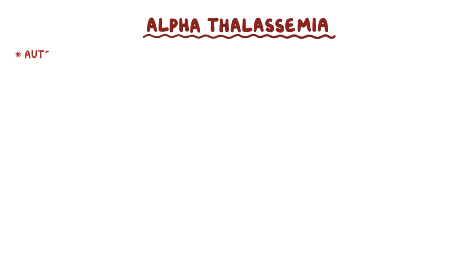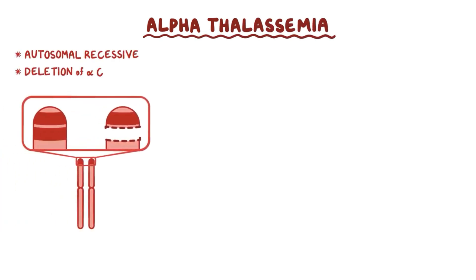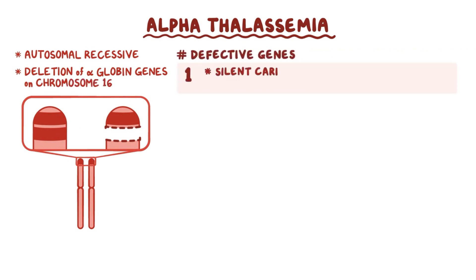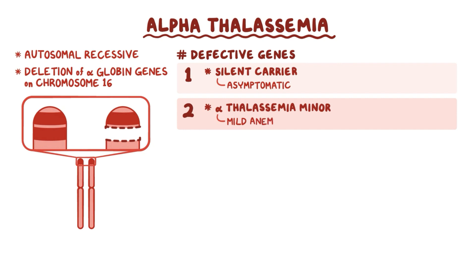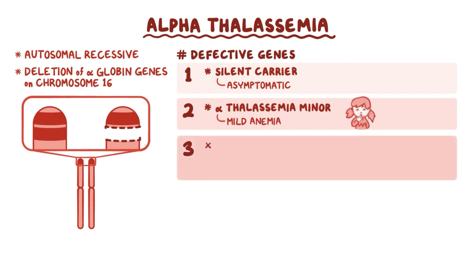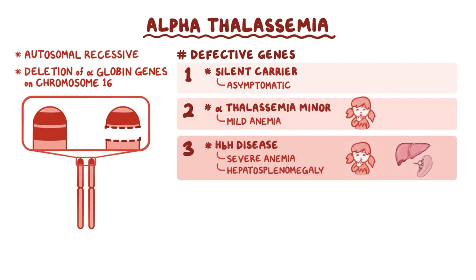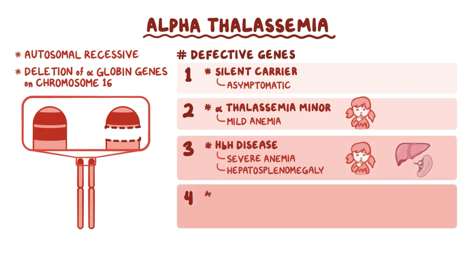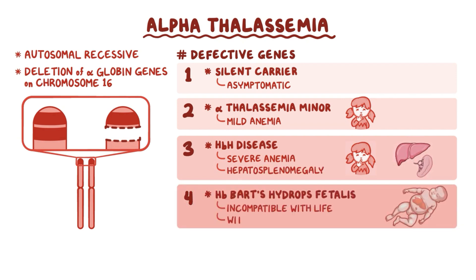As a quick recap: alpha-thalassemia is an autosomal recessive disorder caused by deletion of alpha-globin genes on chromosome 16. A single gene defect results in a silent carrier state, which is asymptomatic. Two defective genes results in alpha-thalassemia minor, which causes mild anemia. Three defective genes cause HbH disease, which causes severe anemia with hepatosplenomegaly. And four defective genes results in HbBart's hydrops fetalis, which is incompatible with life, and without treatment, the fetus usually dies in utero or soon after birth.